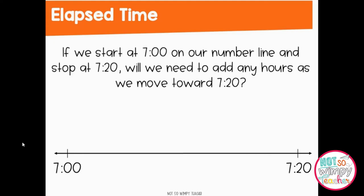Now we're going to take that skill and put it on a number line. To help my students make the connection between the analog clock and showing time on a number line, I like to use a pipe cleaner. I hold a pipe cleaner with both ends up at the top of my clock at 12, or O'clock as we sometimes like to call it. I then unfold those ends, turning my circle into a nice straight line. This is showing that all we're doing is taking the number line that is a clock and unwrapping it to a nice straight line that's easier for us to work with. Here we see those same numbers that they've already worked with within this lesson, moving from 7 to 7:20.